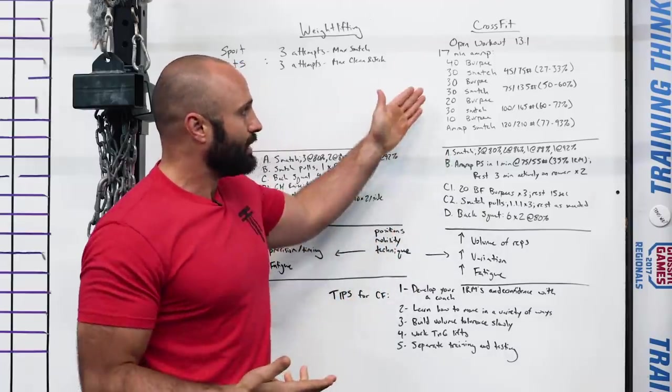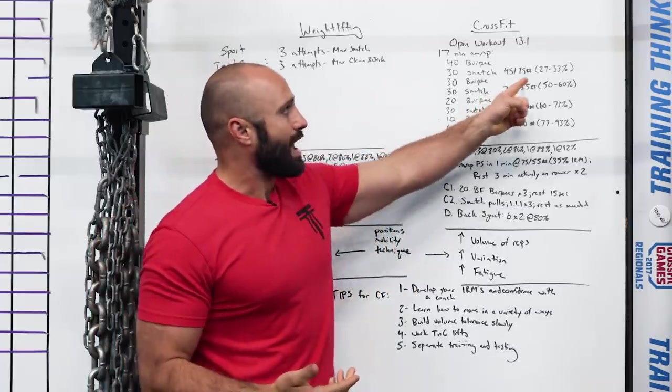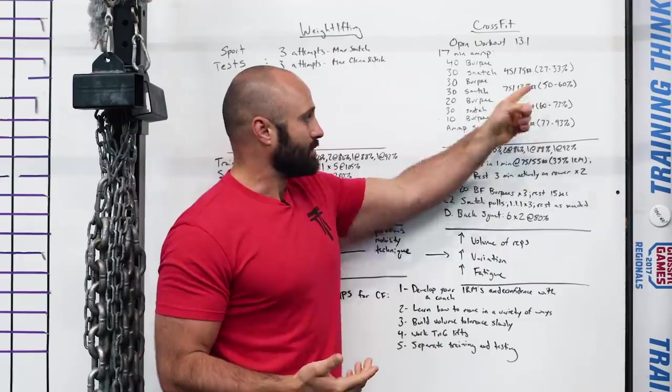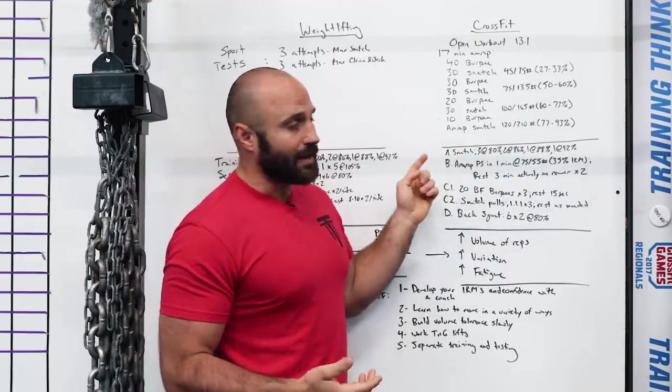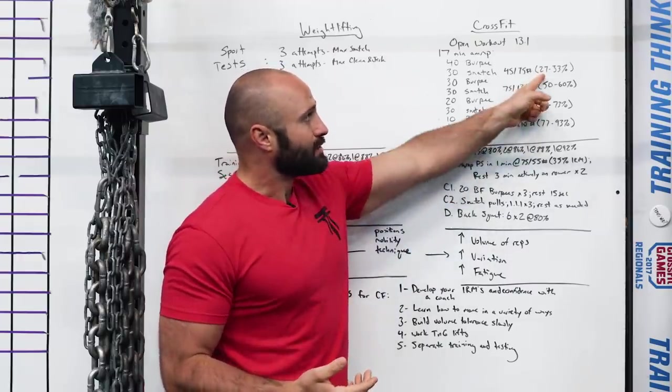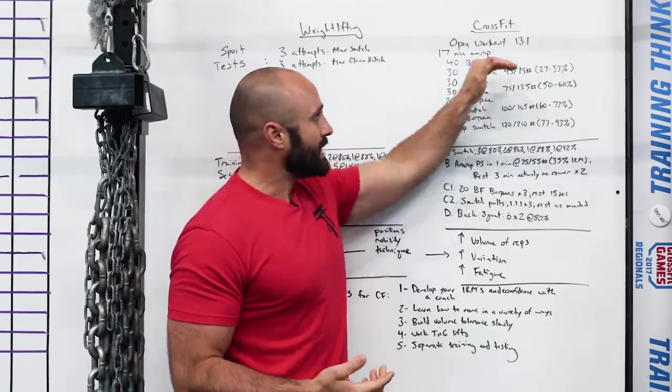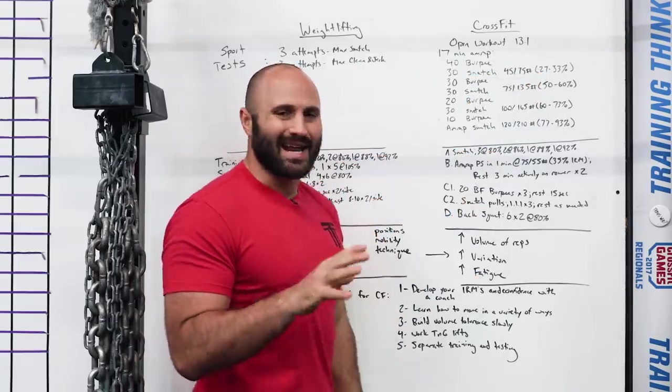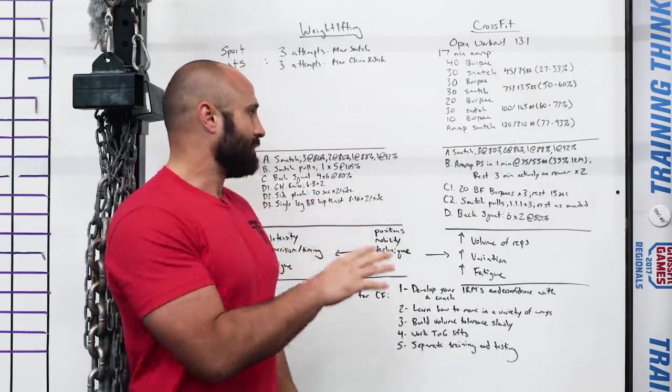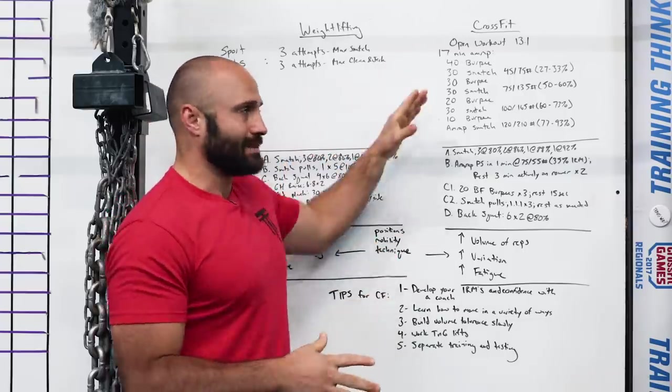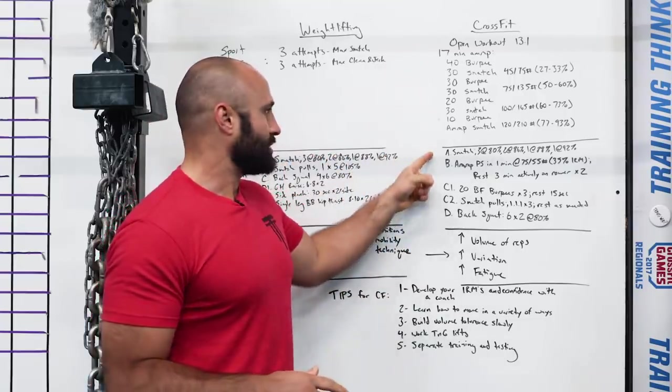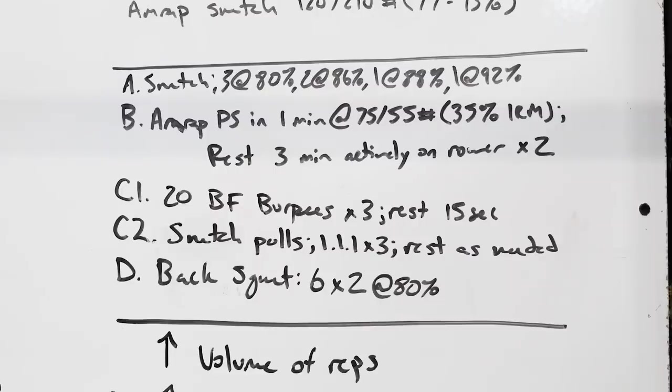So in order to train for that, the progressions look a little bit different. A is snatch, and it's actually the same thing. If you want to be good at CrossFit, then you do really want to drive these percentages as low as possible. So if you have a 300 pound snatch, for example, then these percentages become lighter and it becomes easier as you go through.